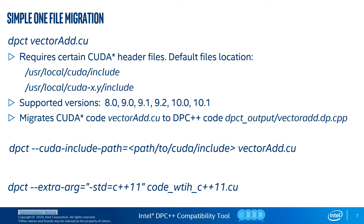As mentioned earlier, sometimes you need to change parser options — for example, to set a default C++ standard. You can do this via the "--extra-arg" option. For instance, invoke the following command to migrate a single source file with C++11 features.